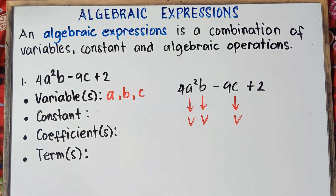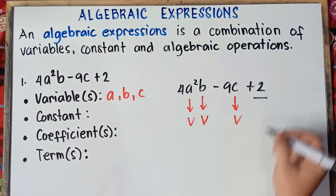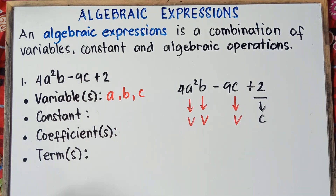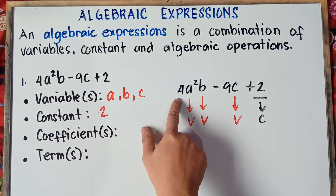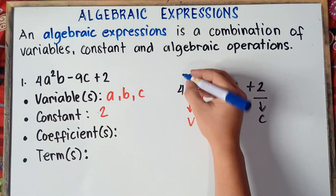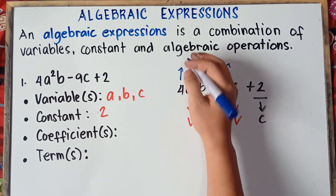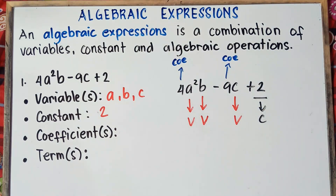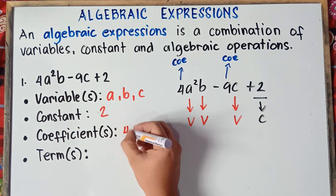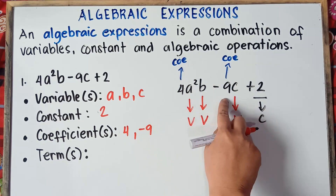The constant is the number alone without the variable — that would be positive 2. The coefficients are the numbers that multiply the variables: we have positive 4 and negative 9. Always include the minus sign, so this is negative 9. Our coefficients are positive 4 and negative 9.